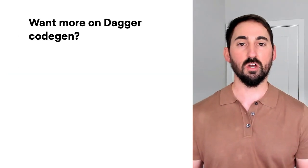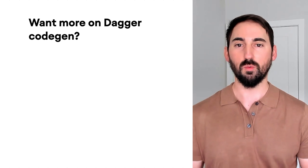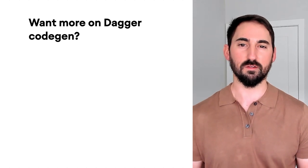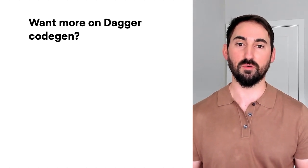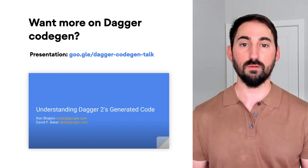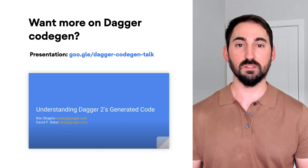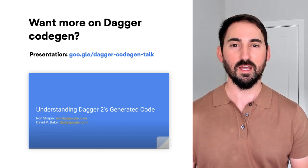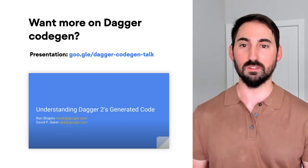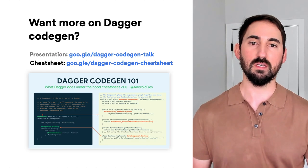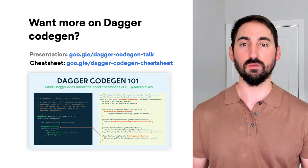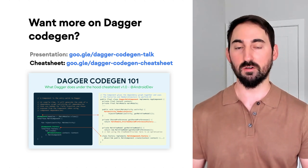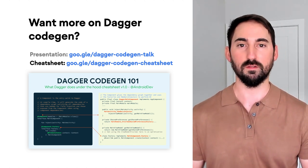As this talk is about Hilt, we won't go into further details about the Dagger-generated code. However, if you're interested, you can check out the presentation by Ron Shapiro and David Baker, and they'll walk you through the details. In addition, you can check out the cheat sheet for Dagger CodeGen 101.